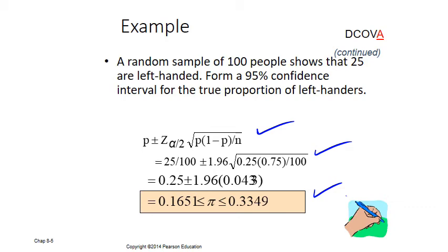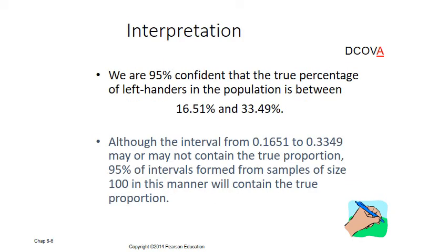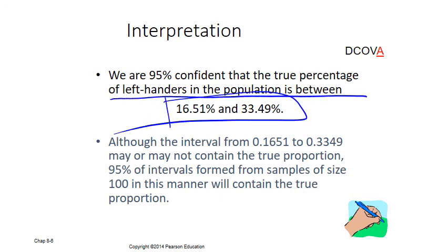To summarize: for population proportion, we always use the Z-test, and the formula is p plus or minus Z alpha by 2 times the square root of p(1 minus p) over n, where p equals x over n. Here x is the count of the characteristic of interest and n is the total sample size. In this example, 25 were left-handed out of 100, so we are 95% confident that the true percentage of left-handed people in the population falls between the two calculated bounds.